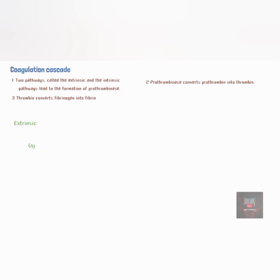The extrinsic pathway occurs following damage to the blood vessel. Factor VII leaves the circulation and comes into contact with tissue factor, forming an activated tissue factor–Factor VII complex. This tissue factor–Factor VII complex acts as a tenase, which activates Factor X.